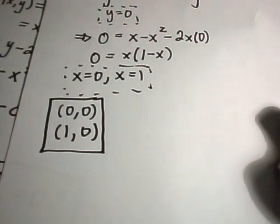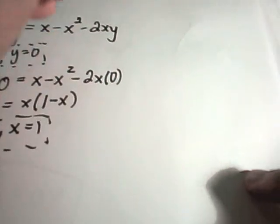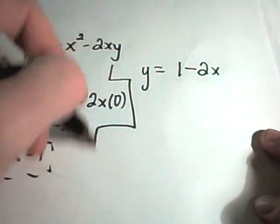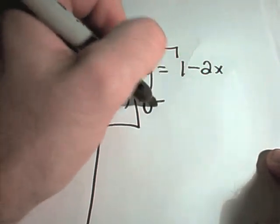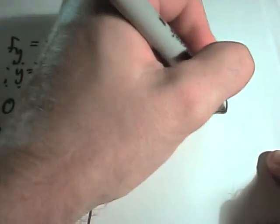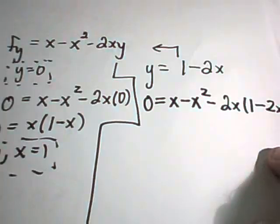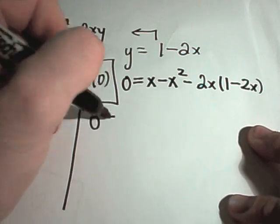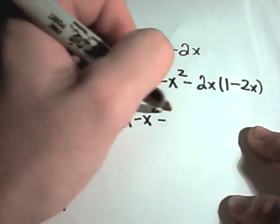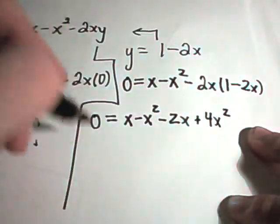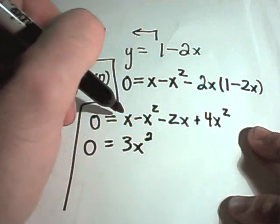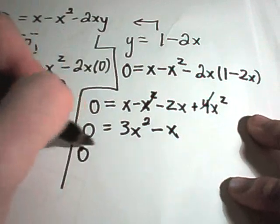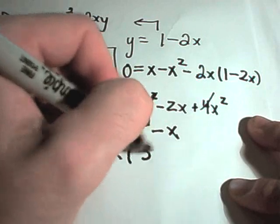We also need to plug in the other condition, y equals 1 minus 2x, into the partial with respect to y set equal to zero. So I'll have zero equals x minus x squared minus 2x times (1 minus 2x). Distributing, I'll get x minus x squared minus 2x plus 4x squared. Combining like terms: 4x squared minus x squared is 3x squared, and negative 2x plus x is negative x. Factoring out x gives x times (3x minus 1) equals zero.